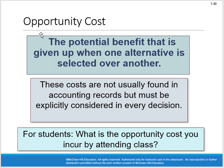Opportunity cost is the potential benefit given up when one alternative is chosen over another. These costs are not usually found in accounting records, but they must be considered in every decision. When you choose option A over option B, what are you giving up? For example, the opportunity cost for students attending class might include time with family, sleep, or paid work. Everything we do has an opportunity cost, and while it may not appear on financial statements, it must be factored into decision-making.